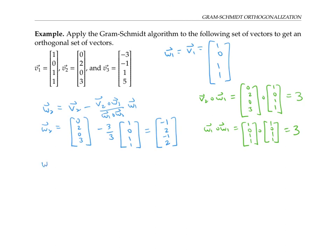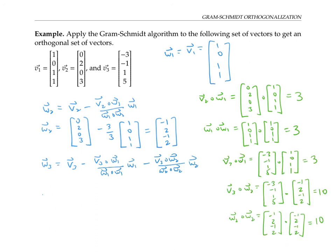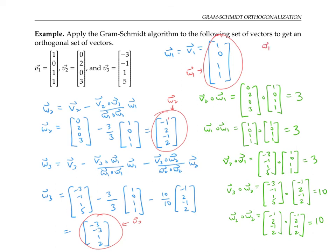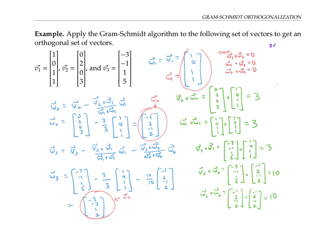Now we build w3, which is v3 minus (v3 · w1)/(w1 · w1) times w1 minus (v3 · w2)/(w2 · w2) times w2. After computing on the side, we end up with the vector −3, −3, 1, 2. So our new orthogonal vectors are w1, w2, and w3, and you can verify that they are indeed all orthogonal to each other. If you want an orthonormal set, simply divide each of w1, w2, and w3 by its length.